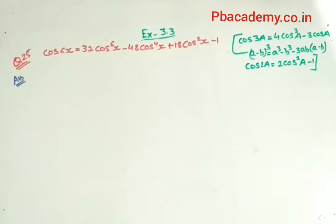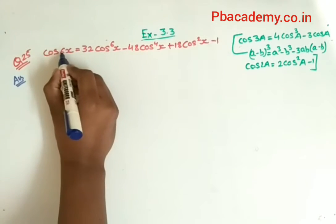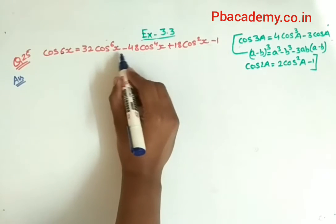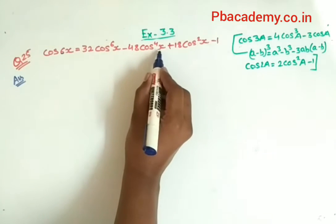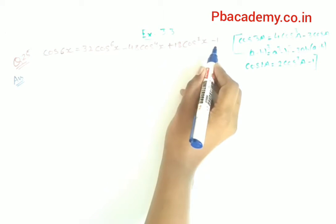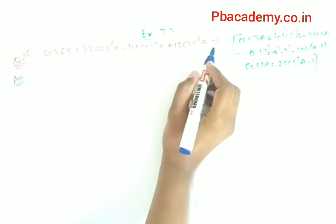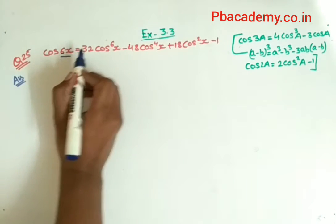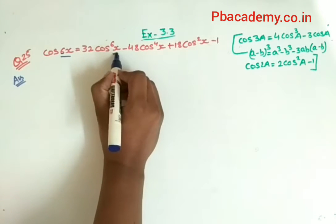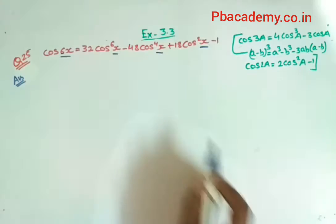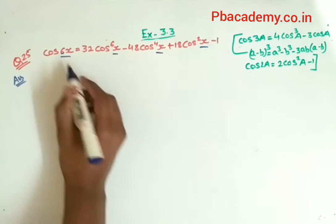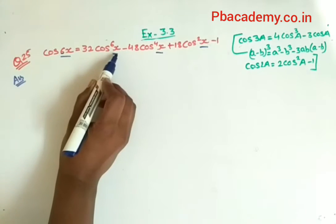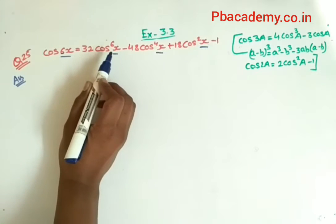In this question we have to prove that cos 6x is equal to 32 cos raised to power 6x minus 48 cos raised to power 4x plus 18 cos square x minus 1. Please notice that on the left hand side the theta is 6x and on the right hand side the theta is x. So the target should be to substitute 6x in terms of x using our identities.